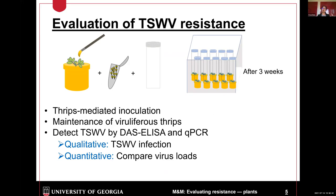First, I had to build up the viruliferous colony in the lab. Once I had enough colony, I put 10 female thrips at the bottom of one- to two-leaf seedlings and covered them with plastic cylinders. Each genotype had 10 plants in one cage. Usually TSWV will show symptoms after two weeks. We then sampled the plants for TSWV detection using ELISA and QPCR to get quantitative data — to know whether the plant is infected and how many virus copies are present.